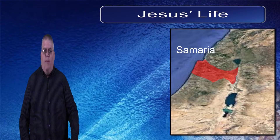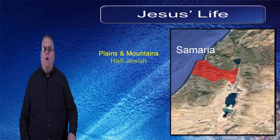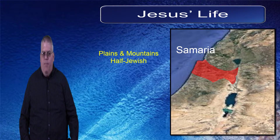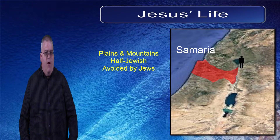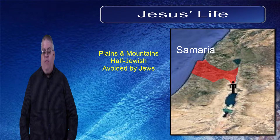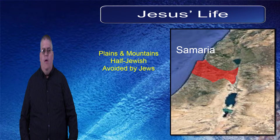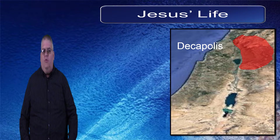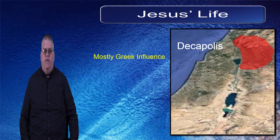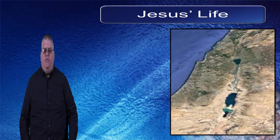And then between these two predominantly Jewish territories was Samaria. It was plains and mountains, but the people were half-Jewish and followed a religion that was only partly Jewish. Therefore, the Samaritans and the Jews of the other territories did not intermingle. Samaria was kind of a no-man's land for a Jew, and they would normally travel all the way around Samaria going from Galilee to Judea, rather than go through Samaria. The last territory to briefly mention is the Decapolis, which means 'ten cities' — the mostly Greek area across the Sea of Galilee. Jesus traveled there on a few occasions. That is the physical setting in which Jesus lived and traveled.